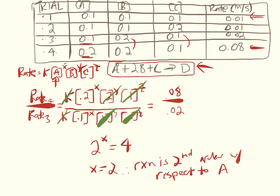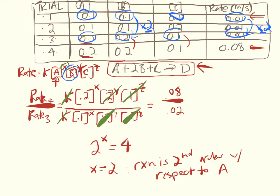We plug that 2 back into the equation, then do the same for B and C. Using the quick method for B: find trials where B changes but A and C are constant — that's trials one and three, where B is doubled while C stays at 0.1 and A stays at 0.1. The rate also doubles from 0.01 to 0.02, so whatever you do to B has the same effect on rate — the reaction is first order with respect to B. We get 2^x = 2, so x = 1.